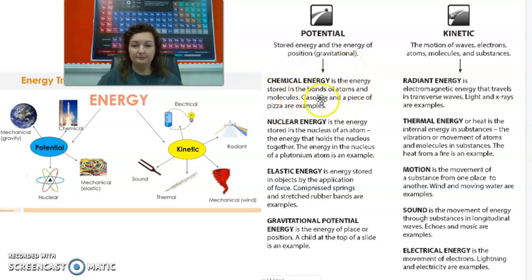So chemical energy would be first. Here's a little picture right here. Chemical energy is the energy stored in the bonds of atoms and molecules. Gasoline and a piece of pizza are examples of this. We already talked about chemical energy. That's going to be like your batteries and food and things like that, your charcoal.